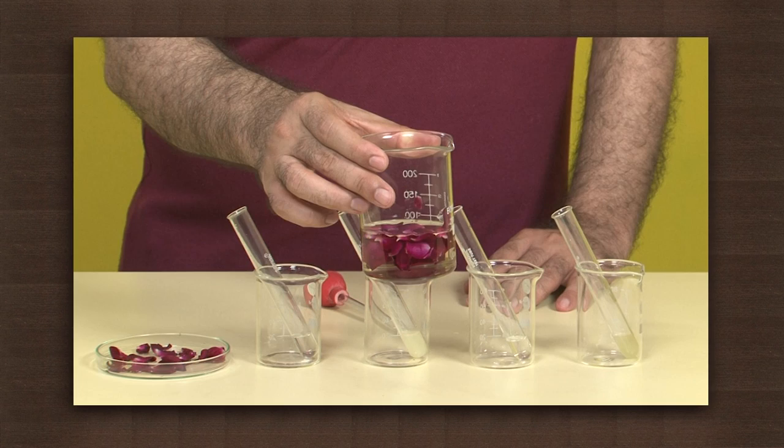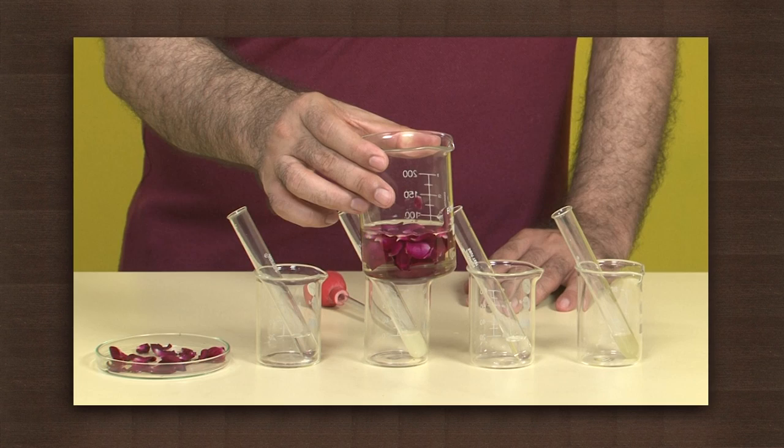We have prepared china rose indicator by adding hot water to china rose petals and leaving it for 30 minutes.